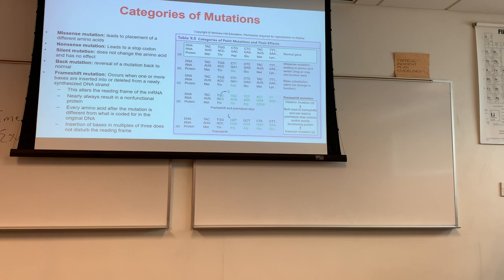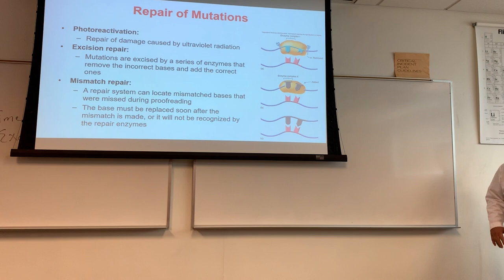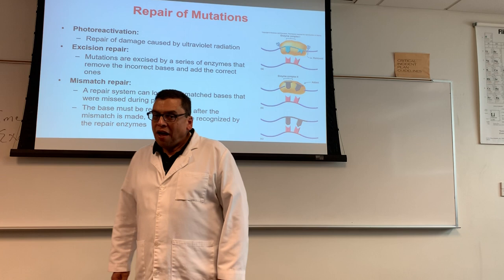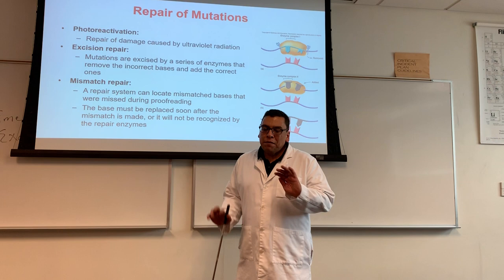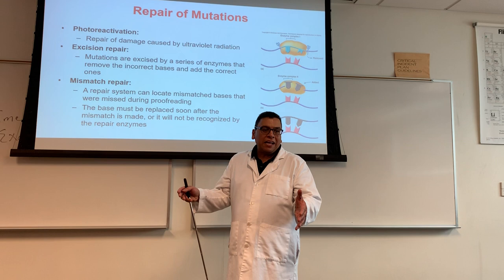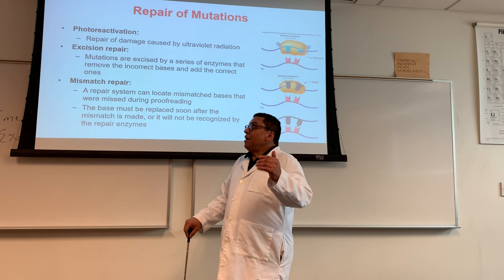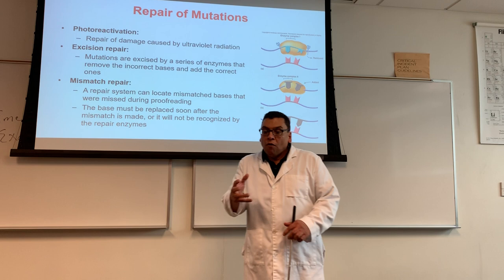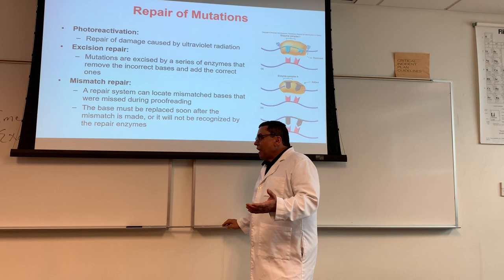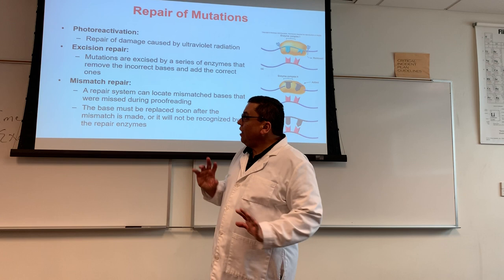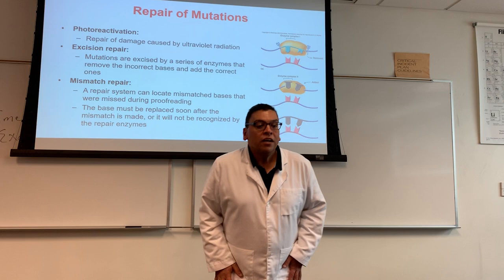Our cells are not going to just sit there and accept a genetic mutation — they're going to try their best to fix these mutations. The best time to fix a genetic mutation is at the time DNA polymerase makes it. DNA polymerase makes a mistake and right away fixes it — that's the best time. Like the best time to fix a broken wall is when you're building it. But sometimes DNA polymerase 3 goes through, makes a mistake, doesn't realize it, and moves on. Luckily we have the supervisors — enzymes that come and check DNA polymerase 3's work.